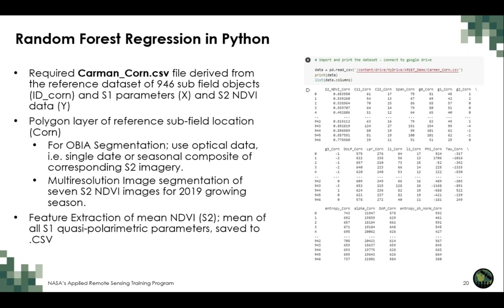Once objects for the surveyed corn fields are established, a mean zonal extraction is performed from each raster image parameter to the object level, creating a table of mean values for Sentinel-1 image data and corresponding Sentinel-2 NDVI images. The final CSV table format includes an ID value for the corn sub-field object, a field with the date of image acquisition, and the known Sentinel-2 NDVI value for each sub-field object — which serves as the Y variable for the random forest regression.